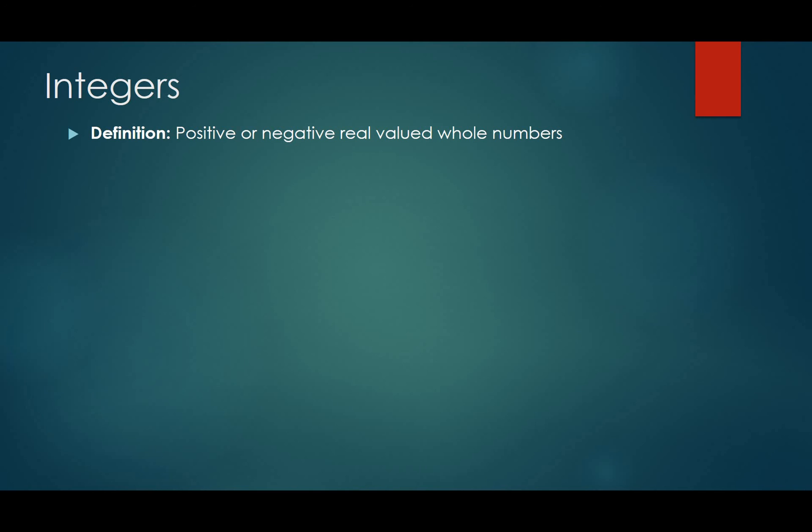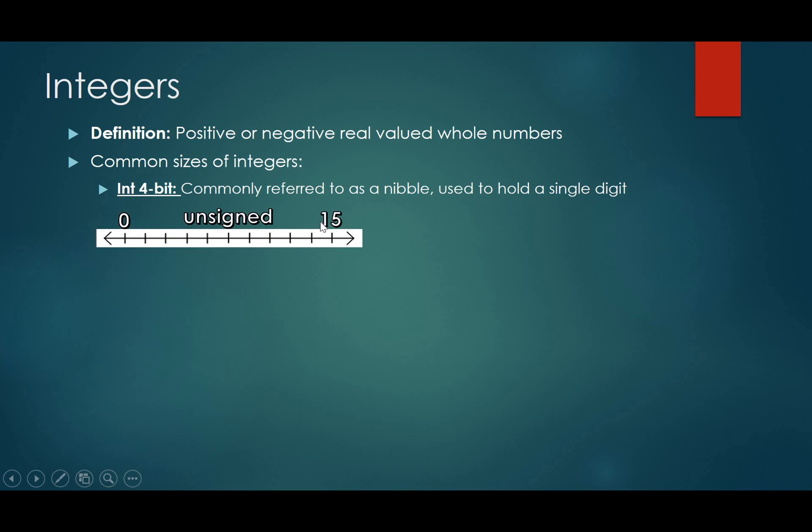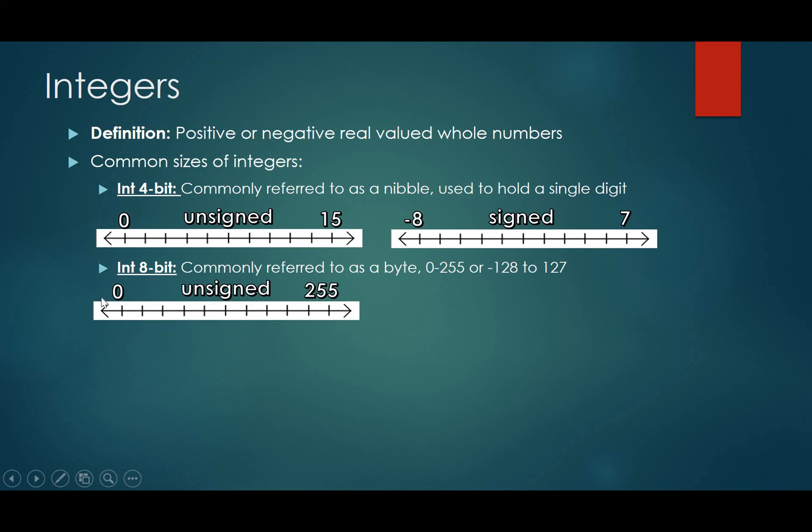So the first type that I'm going to talk about is just a 4-bit integer. Now, this int is just short for integer. It's very common. This is commonly referred to as a nibble, and it is used to hold a single digit. Now, if we were to break it down, 4 bits of information could store 0 to 15 would be the maximum number of 4 bits if it was unsigned. Signed would be negative 8 to 7. So you can see why it's usually a single digit. And then next up, we have an 8-bit integer, which is commonly referred to as a byte. And unsigned, that goes from 0 to 255 or negative 128 to 127.